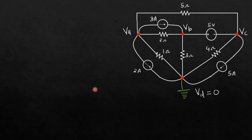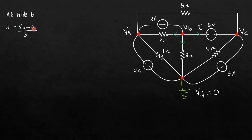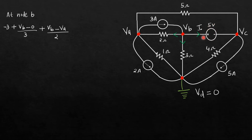Now apply KCL at node B. Assume currents in most branches are outgoing. The 3A current in one branch is incoming, so it becomes minus 3. The current through the 3-ohm resistor is VB minus 0 divided by 3, and through the 2-ohm resistor is VB minus VA divided by 2. However, in the branch containing only a voltage source with no resistance, we cannot write a standard KCL expression. So we assume an unknown current I is flowing outward in that branch, writing plus I. The sum of all four currents equals zero.